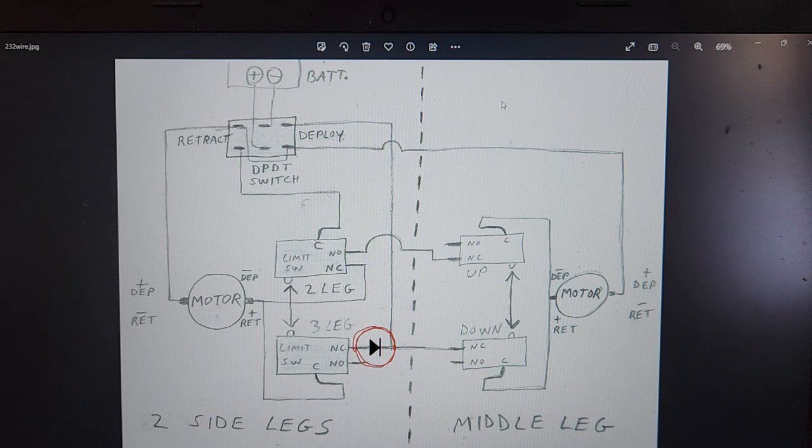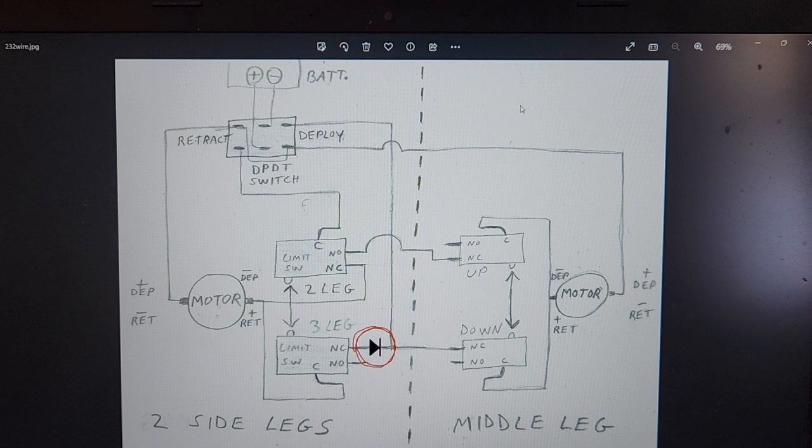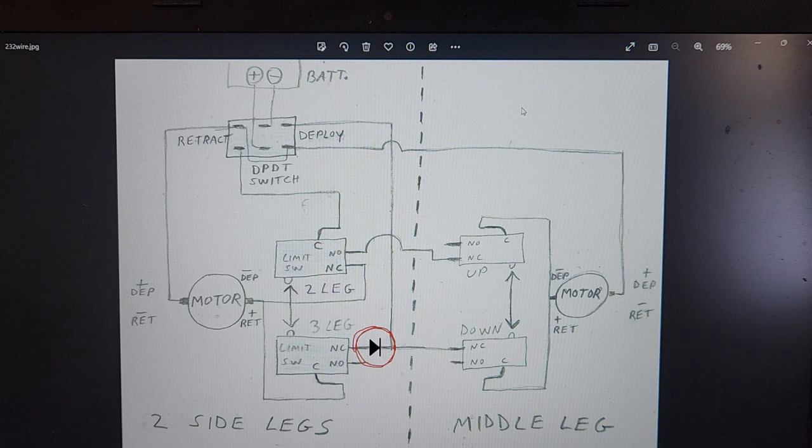It had worked for years. I had done hundreds of transitions. And then one year at Discovery World that droid did a face plant because the middle foot started going up before the side legs drew in. So I'm going to have to gut that thing and see what failed. I'm thinking it's just a limit switch that failed.